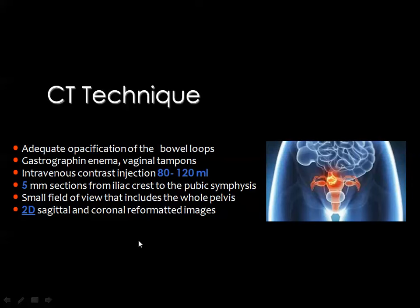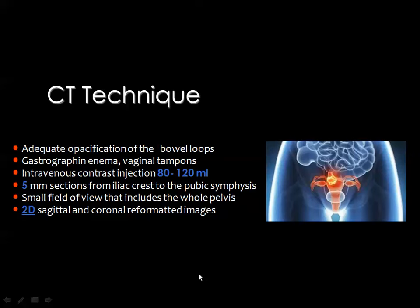Sometimes we need to put vaginal tampons especially when evaluating lesions in the uterine cervix or proximal vagina. In many conditions we need to inject contrast medium. The pelvis is scanned from the level of the iliac crest down to the pubic symphysis or even lower to cover the anal canal. We use a small field of view, and sagittal and coronal reformatted images are usually helpful.